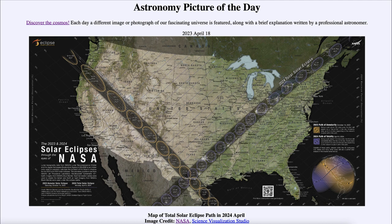This means the moon will pass in front of the sun but a ring of sunlight will remain visible around the moon. So it will not be a complete total solar eclipse, but it is still an amazing sight to see coming up this October.